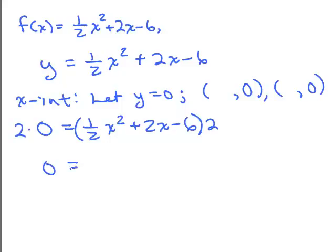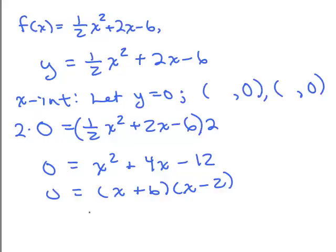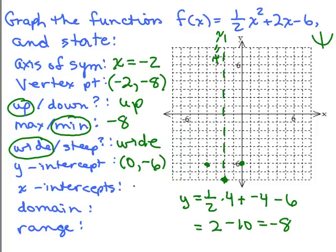So I get 0 equals, well, 2 times 1/2 x² will be x² plus 2 times 2x is 4x minus 2 times 6 is 12. And now that's a lot easier to factor. So let's see. That will be (x + 6)(x - 2). So I'm going to get two possibilities, -6 or 2. So that's what will go here, -6 or 2. There are going to be two x-intercepts. So let's check it out and see if that makes sense. -6 and 2.